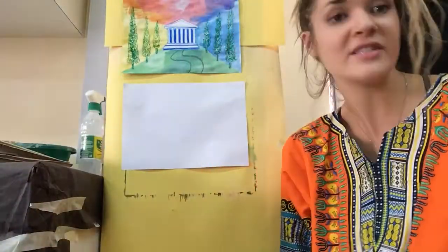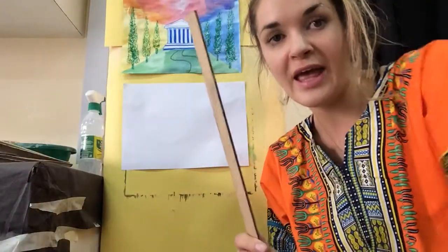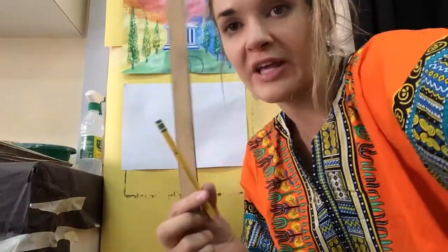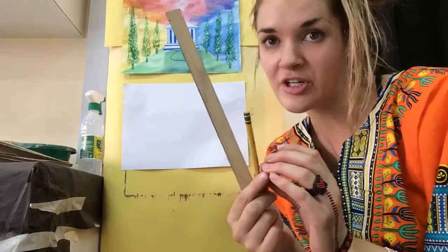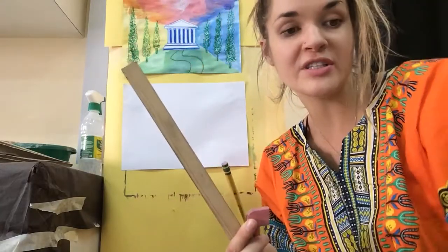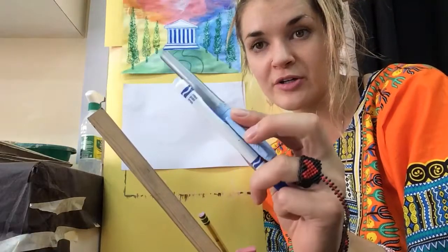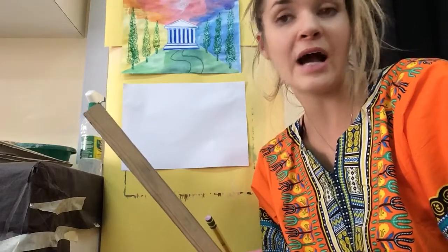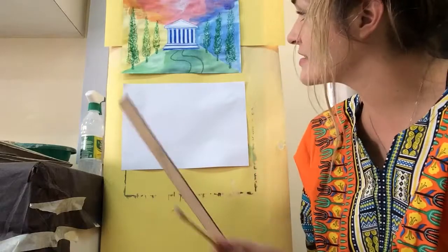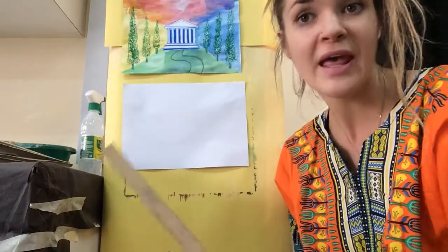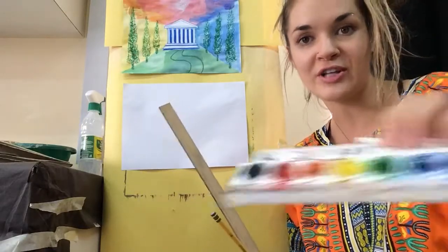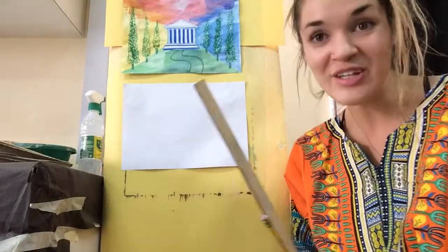Today you're going to need a ruler and a pencil and an eraser. You're also going to need some markers, a light blue marker and a dark blue marker, and I'm going to use a few oil pastels when I do my trees. And of course, watercolor paint. So let's begin.